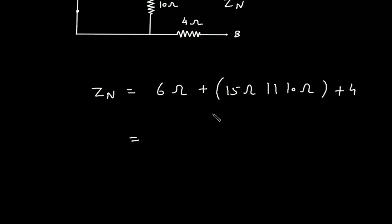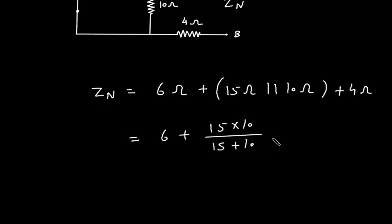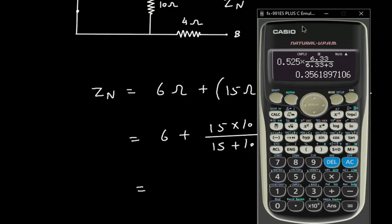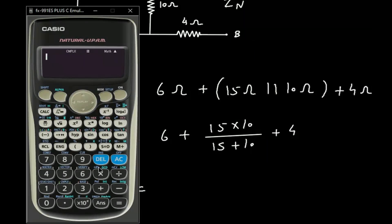So this will be: 6 plus (15 × 10) divided by (15 + 10), then plus 4. So the result is 16.